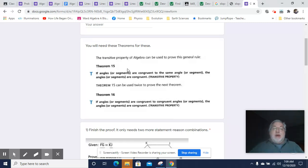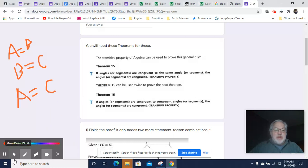So here we have a couple of theorems referring to something called the transitive property. Now the transitive property is simply something like this. Let's read these and make sure we understand them.